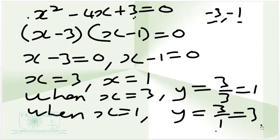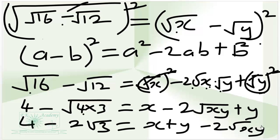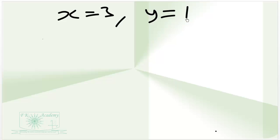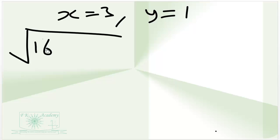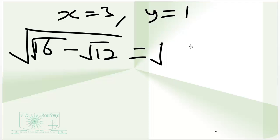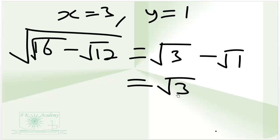So remember how we began: the square root of square root of 60 minus square root of 12 is equal to root x minus root y. The values of x and y that satisfy that equation require x to be greater than y, so x must equal 3 and y must equal 1, so that we get a positive square root. Therefore, we obtain square root of square root of 60 minus square root of 12 equals square root of 3 minus square root of 1, which gives us square root of 3 minus 1.